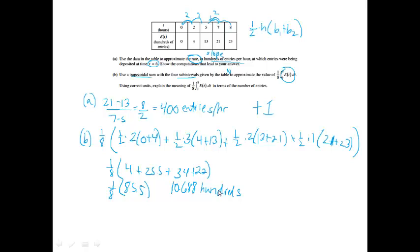And then from there, it says, using correct units, explain the meaning of this. Well, we know if we do 1 over B minus A on the outside, it's going to be the average number of whatever this is. So 10.688 is the average number of hundreds of entries from the time period T equals 0 to T equals 8, or we could say from noon to 8 p.m.